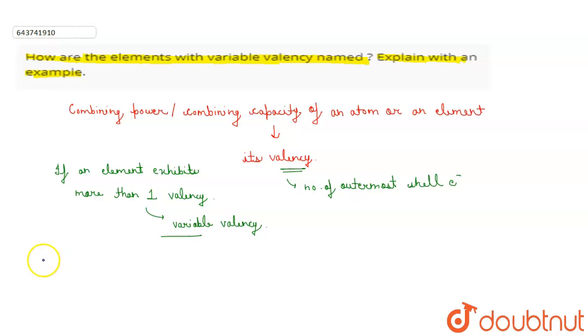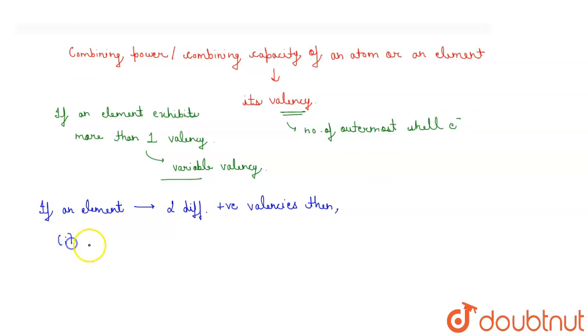If an element exhibits two different positive valencies, then for the lower valency we use the suffix -ous at the end of the name of the metal.